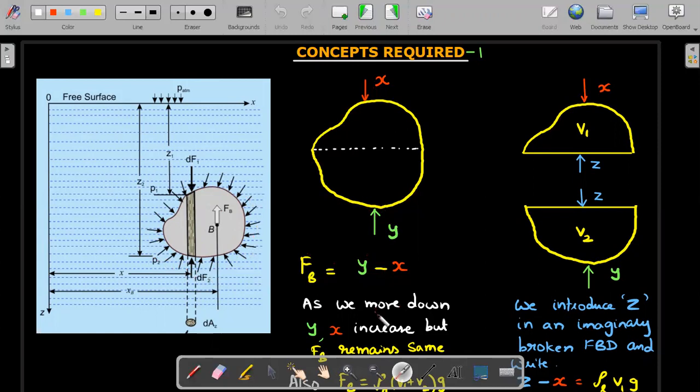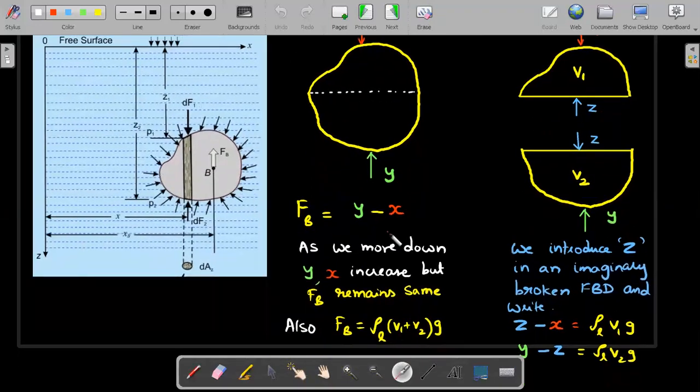Now, very important thing that you need to understand here is if the body distance from the free surface is kept on changing, that means I submerge it lower and lower. It's obvious the values of both Y and X will increase. So the value of both Y and X increase, but the subtraction, the buoyant force, and that's the magic of buoyant force is always related to the total volume of the body submerged that will remain constant.